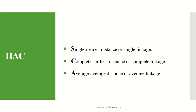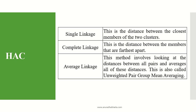HAC can be represented using three techniques: single nearest distance (single linkage or single link), complete farthest distance (complete linkage or complete link), and average distance (average linkage or average link). Single linkage is the distance between the closest members of two clusters — min is used. Complete linkage is the distance between the farthest members — max is used. Average linkage averages all pairwise distances, also called Unweighted Pair Group Mean Averaging (UPGMA).